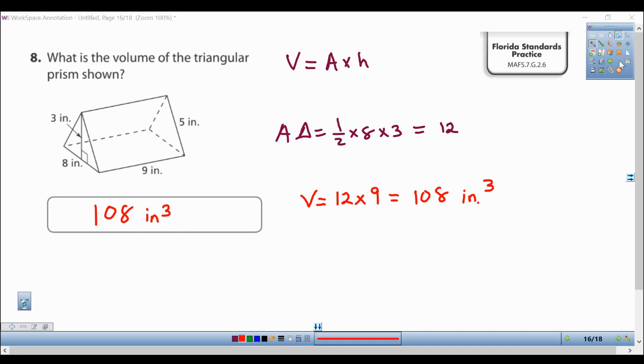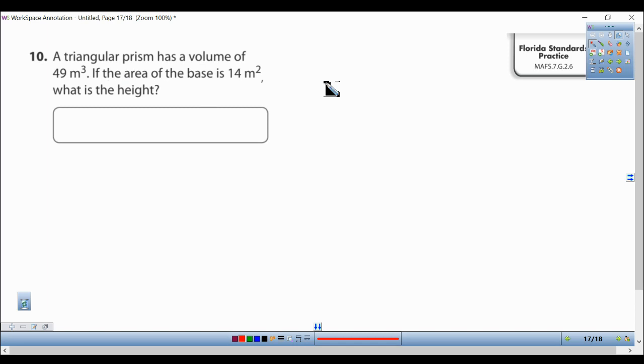So a triangular prism has a volume of 49 meters cubed. If the area of the base is 14, what is the height?